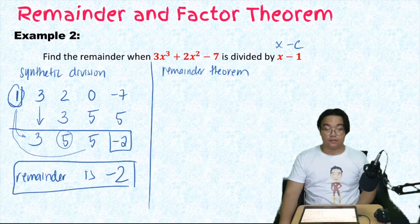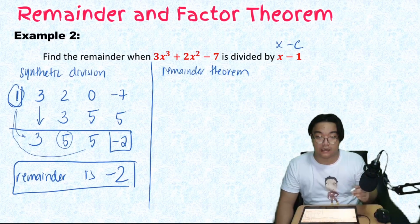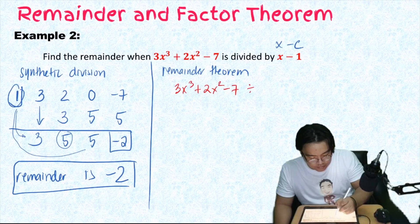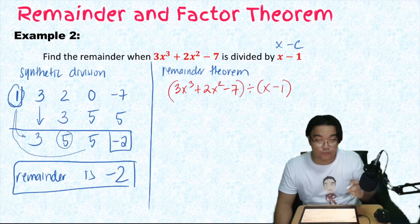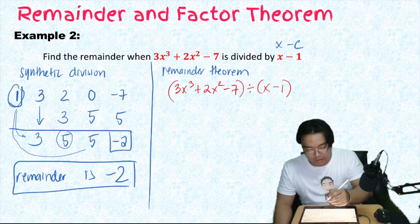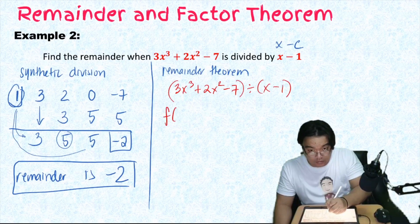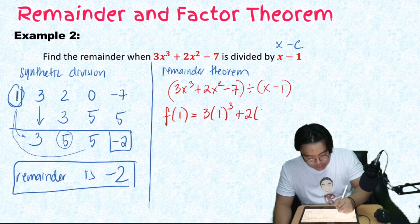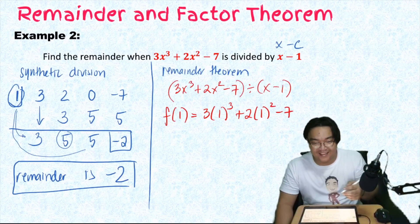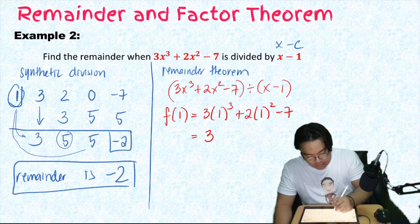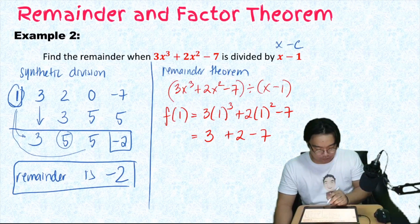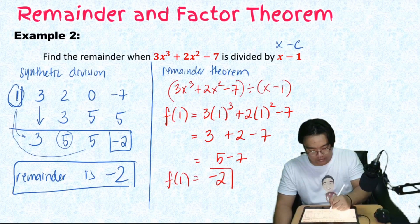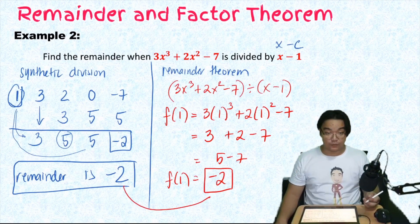Now let's verify using the remainder theorem. f(1) = 3(1)³ + 2(1)² - 7 = 3 + 2 - 7 = 5 - 7 = -2. Both methods give the same answer: the remainder is -2. You have two options — if you're just asked to find the remainder, apply the remainder theorem; if you need the quotient, use synthetic division.